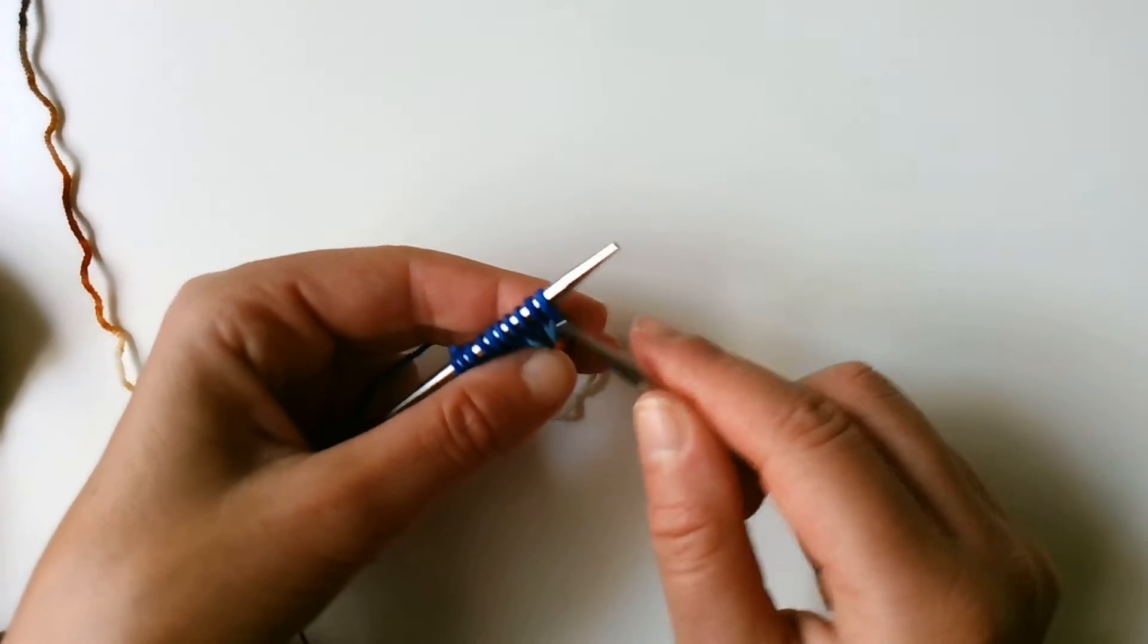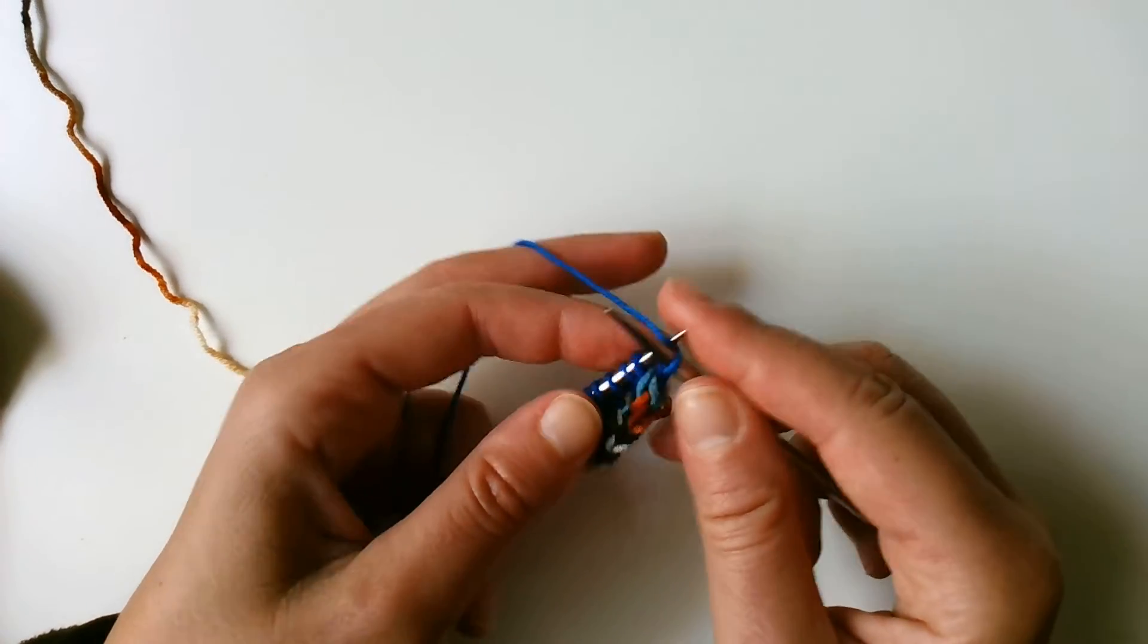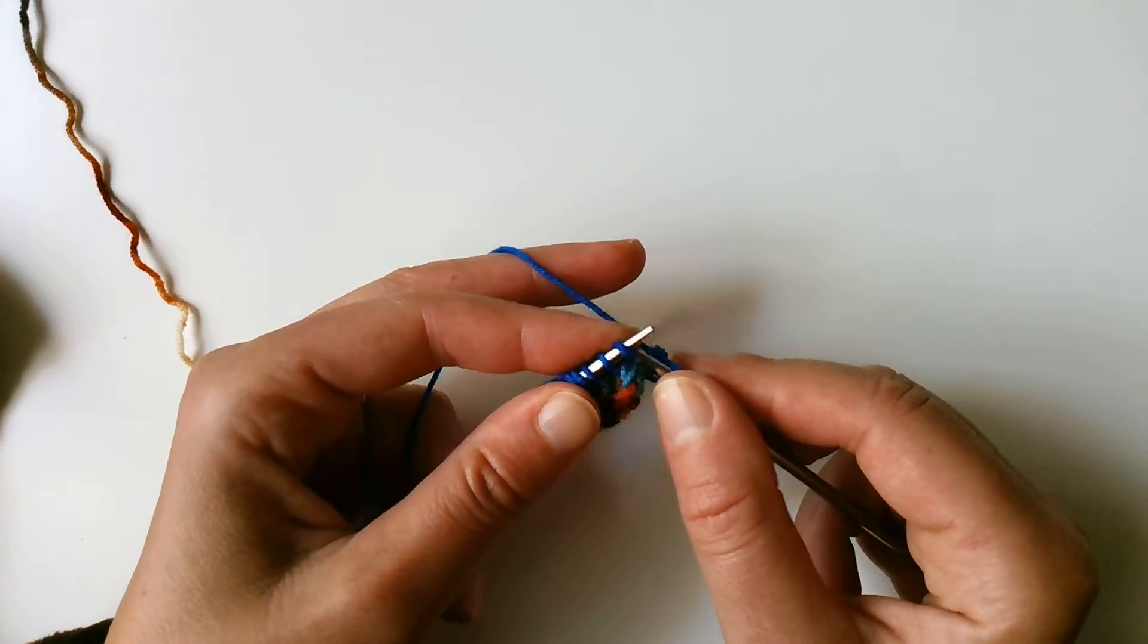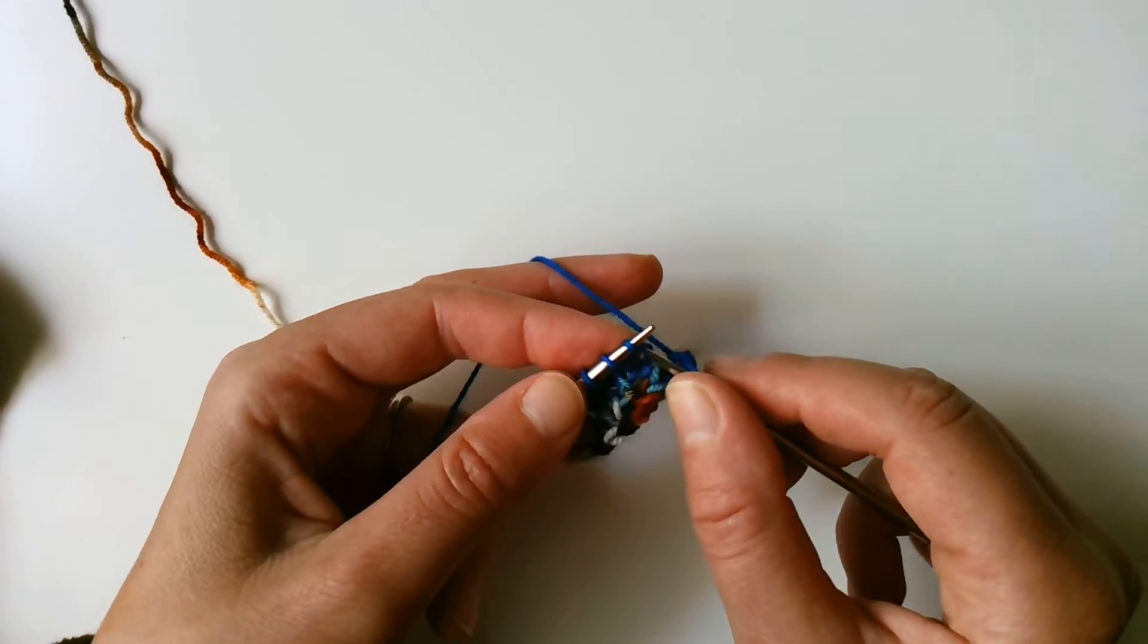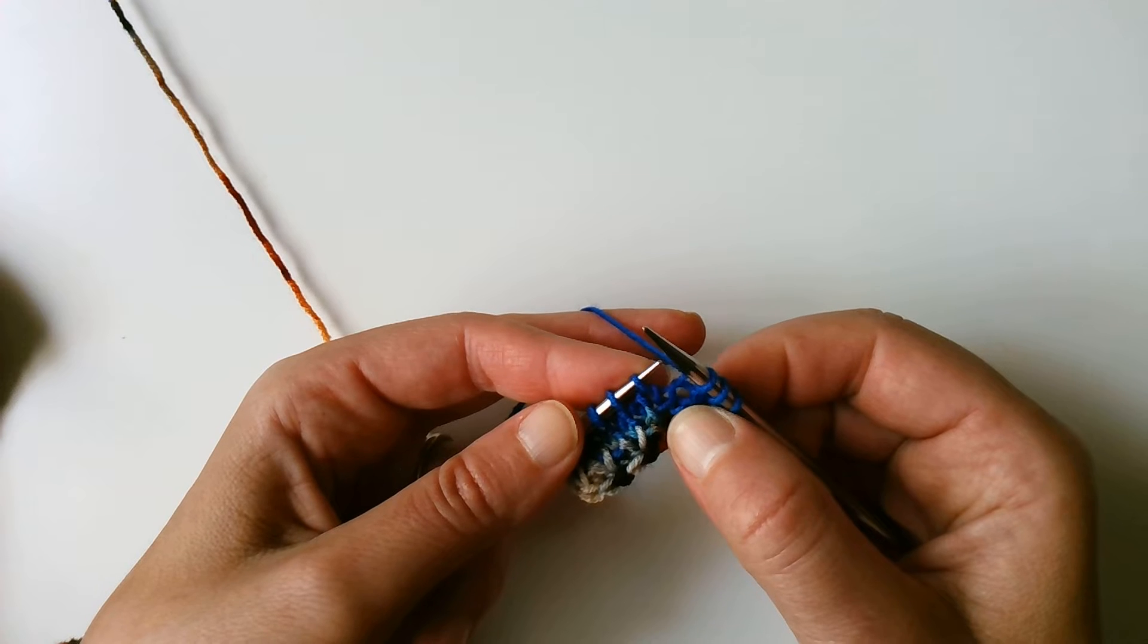All right, so we have a two-stitch I-cord edging, so we knit two for that I-cord edge, and then we're going to get